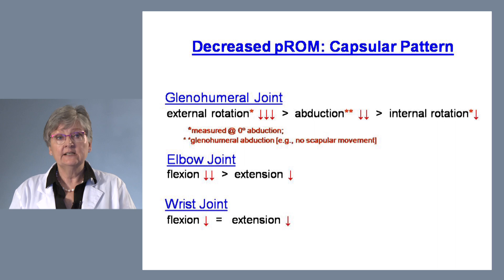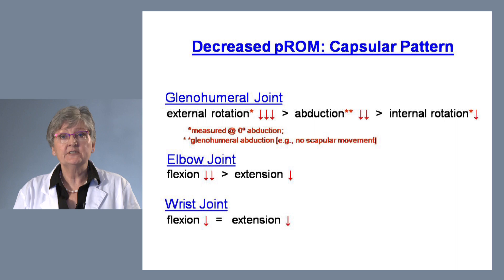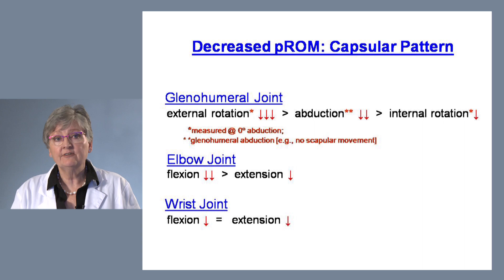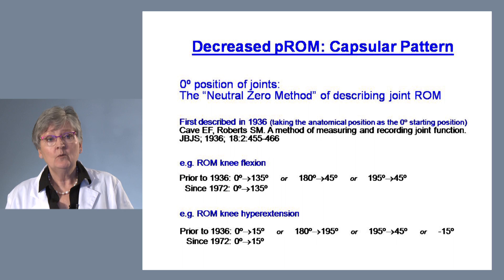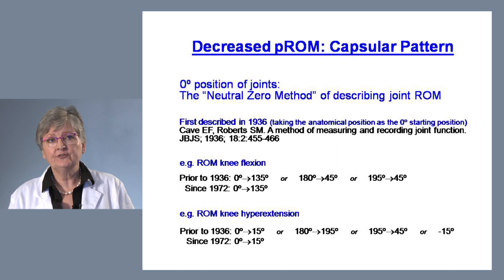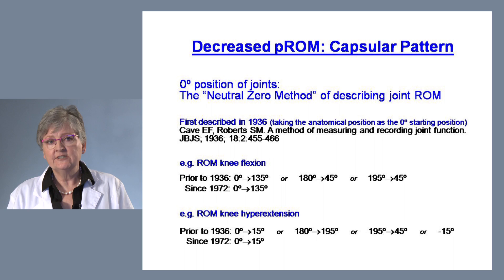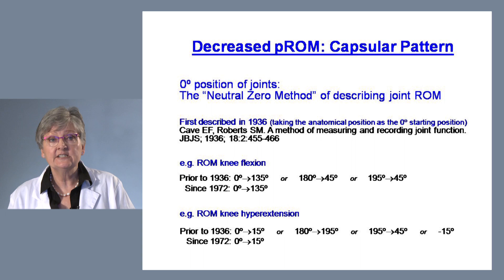For the glenohumeral joint, decreased range of motion in a capsular pattern means losing first external rotation — the largest decrease — then glenohumeral abduction, then internal rotation. At the elbow, there is no more loss of flexion than extension. At the wrist, you lose the same degree of flexion as extension. Every joint is unique in its capsular pattern because the capsule in the zero position — the anatomical position — is not taut equally in all directions.